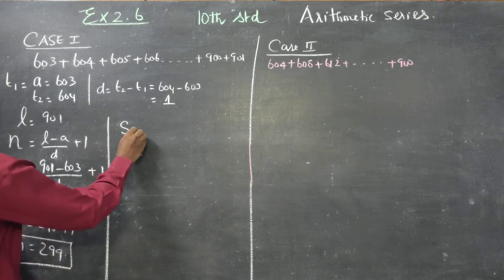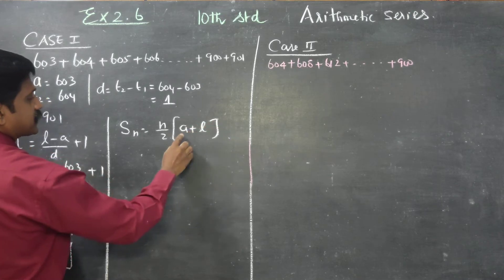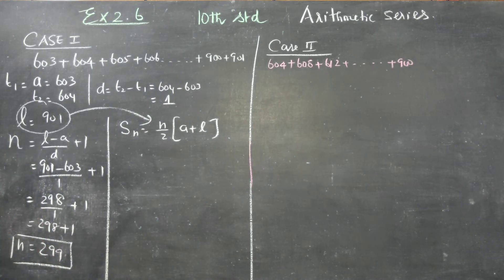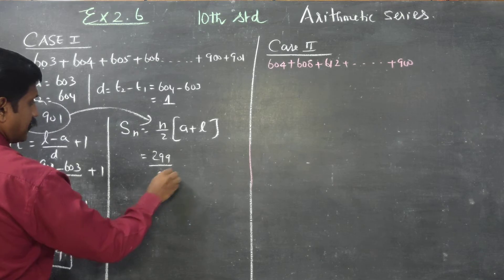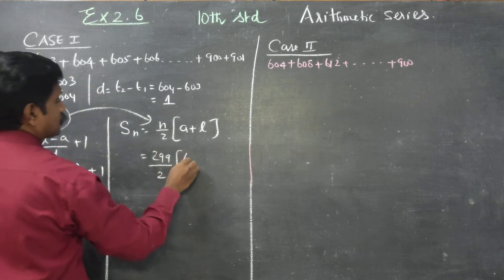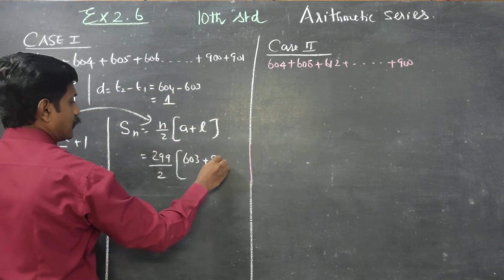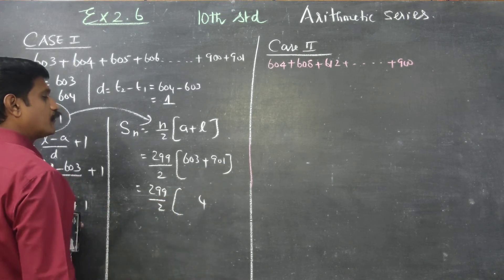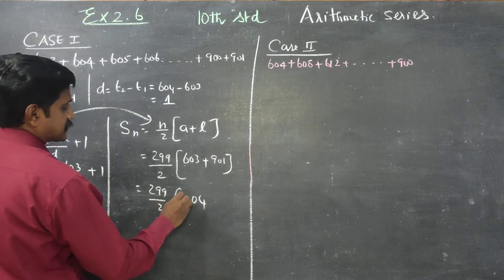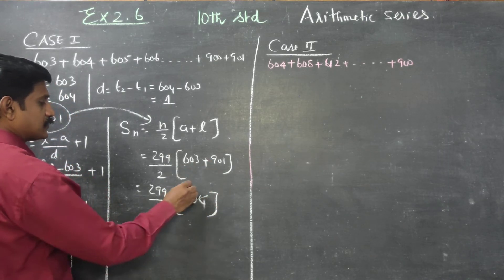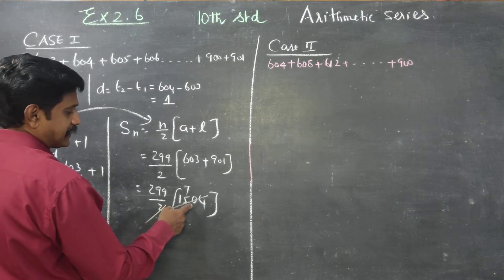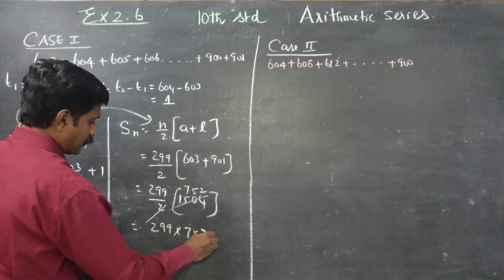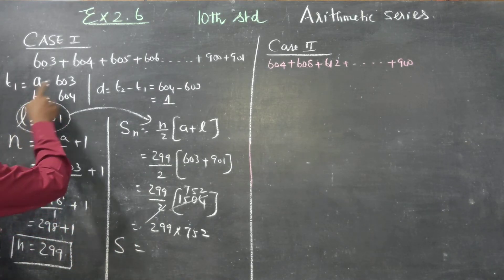Using S_n formula: S_n = n by 2 times (a plus l). With n = 299, a = 603, l = 901: S_n = 299 by 2 times (603 plus 901) = 299 by 2 times 1504 = 299 into 752. Case 1 answer is 299 into 752.